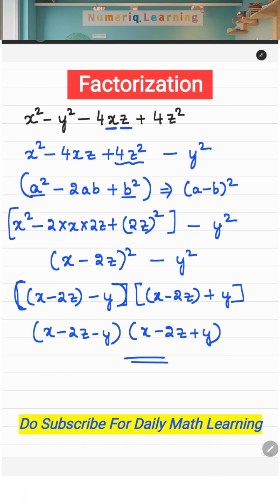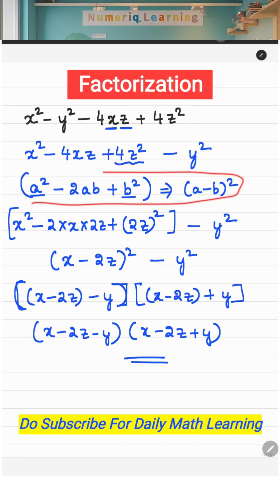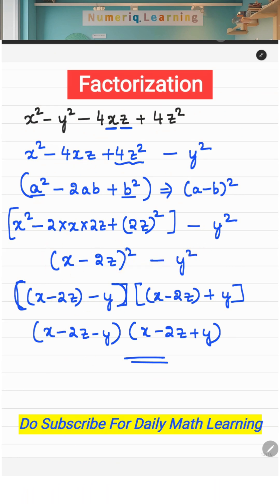Hope you understood — it's very simple. The minute you get such questions, you have to find out which algebraic identity can immediately be used. The hint is: take the x term and z term together — x squared minus 4xz plus 4z squared — think of a minus b the whole square. Then a squared minus b squared is a minus b into a plus b. That's the answer. Hope you understood. Do like, share, and subscribe!